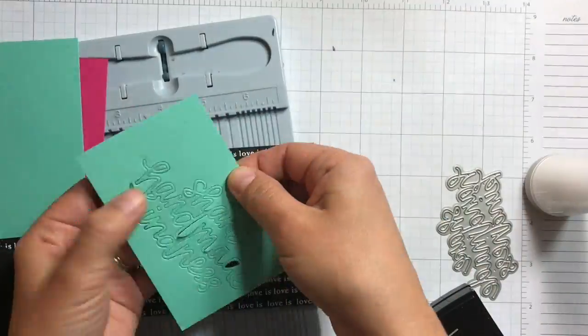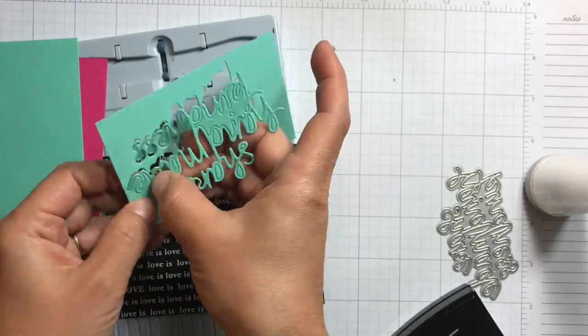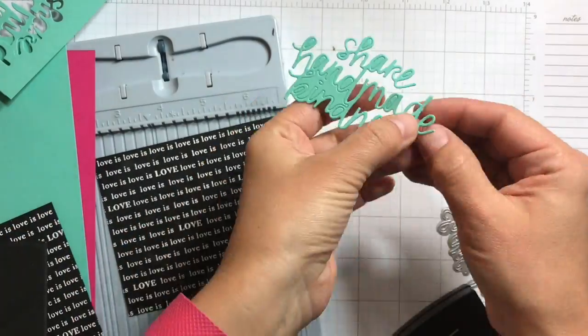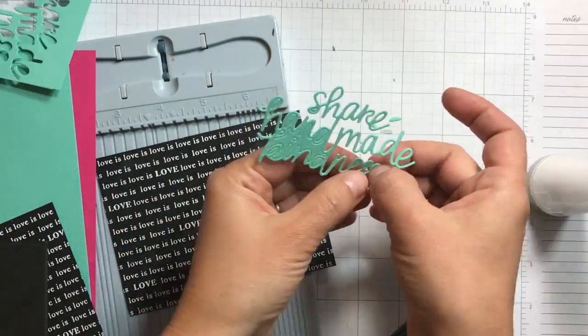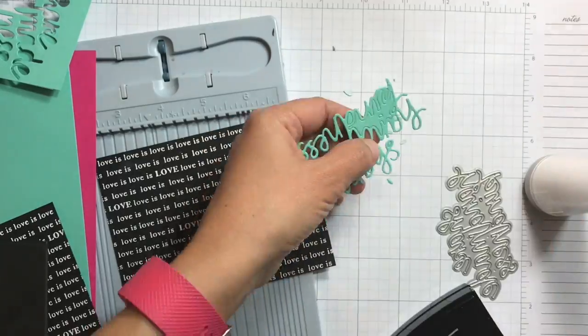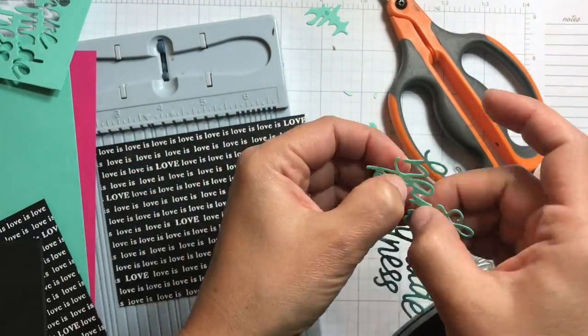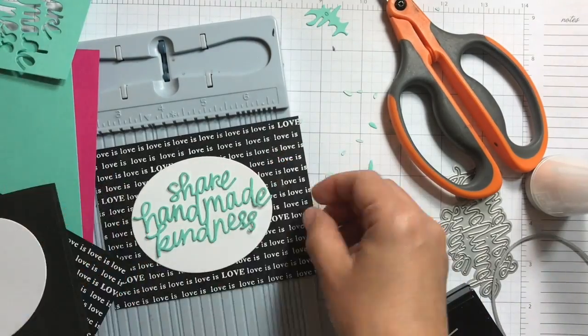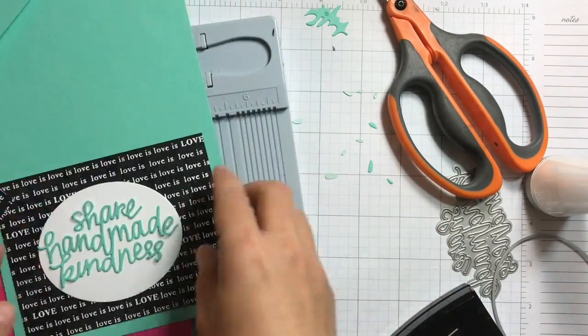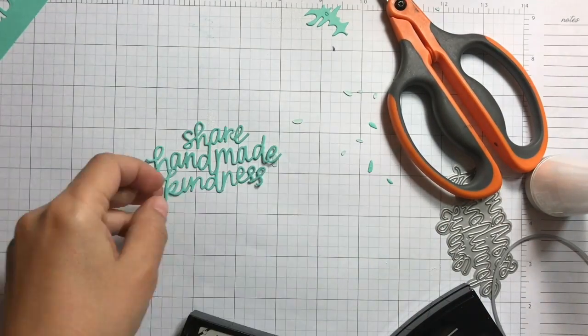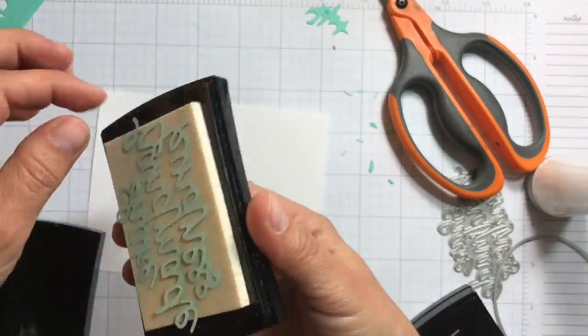Next I have the die-cut sentiments. On the back of my cardstock I added stick-it adhesive, so that way makes it easier to adhere it onto my project.